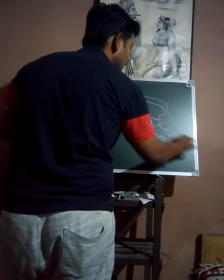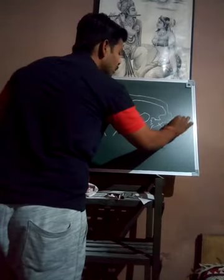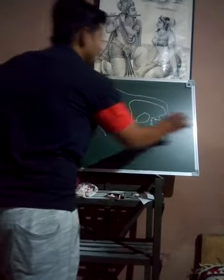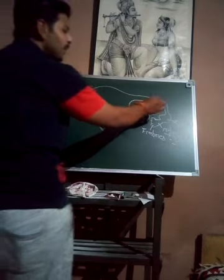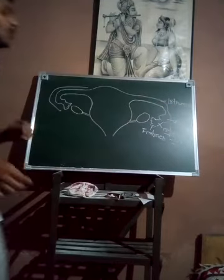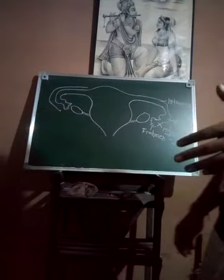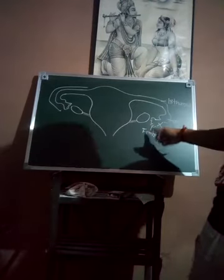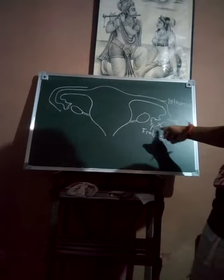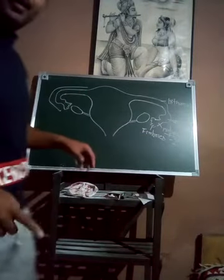The funnel-shaped part is called the infundibulum. Then you can see the wider part of the Fallopian tube, which is called the ampulla. Then the long cylindrical part of the Fallopian tube is called the isthmus. The Fallopian tube has a length of around 10 to 12 centimeters and can be differentiated into three parts: fimbriae, infundibulum, ampulla, and isthmus.